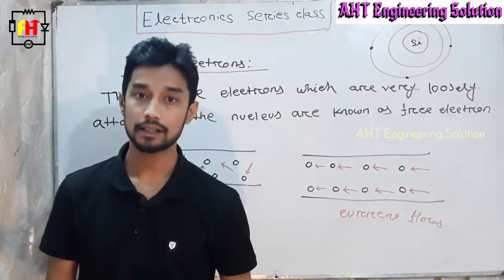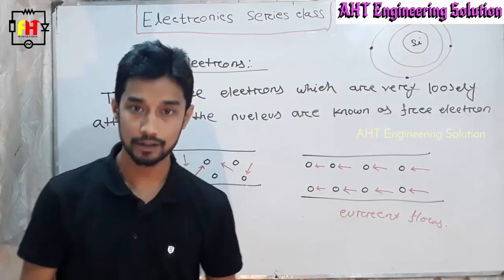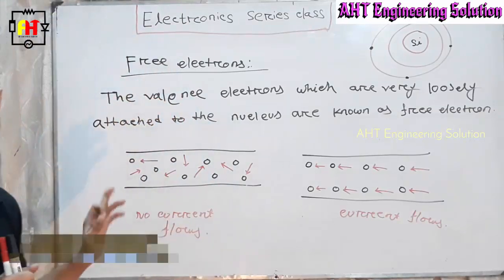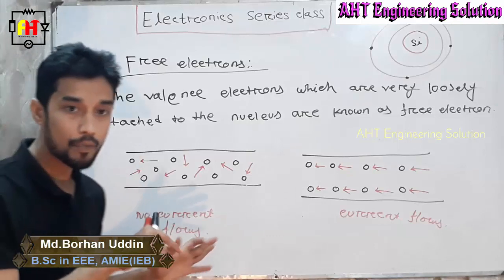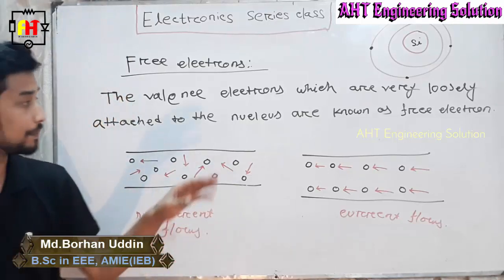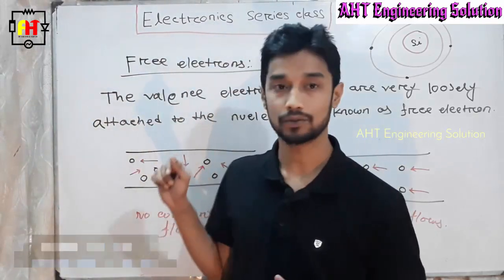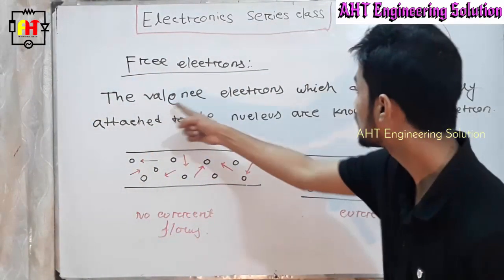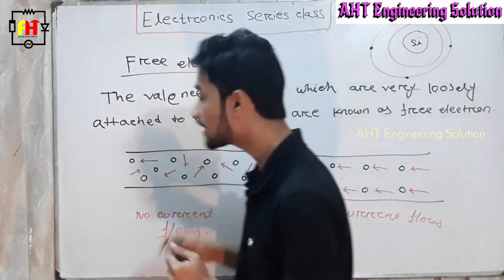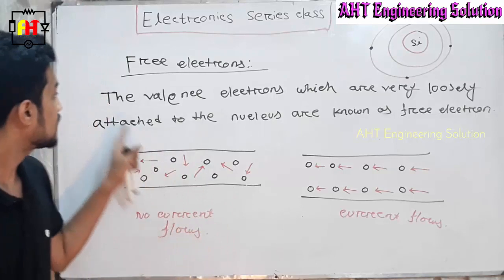Welcome to our AST Engineering Solution for Electronics class. Now, free electron — what is free electron? This is an important part for this electronics series. It's a basic part for this series. Free electron is the valence electron which is very loosely attracted to an atom, known as a free electron.